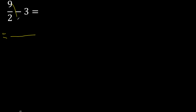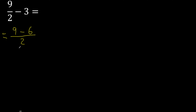First, 9 minus 2 multiplied by 3 is 6. Here, 9 minus 6 is 3. Finish it.